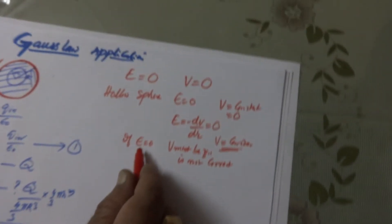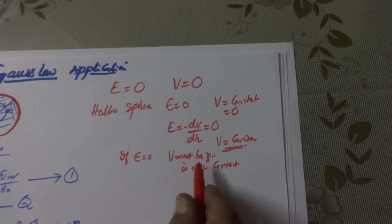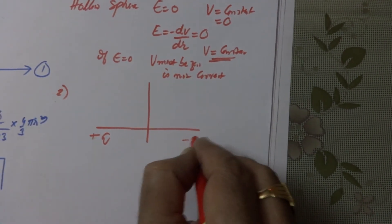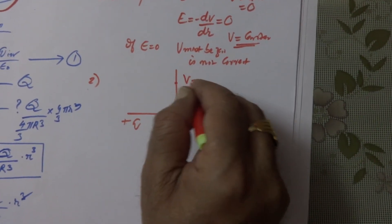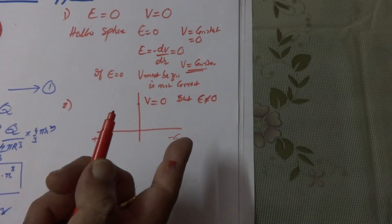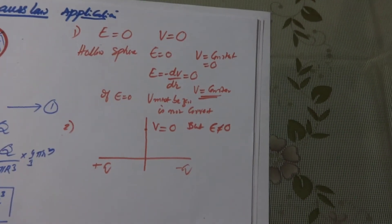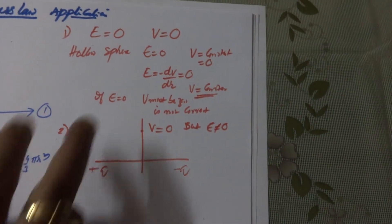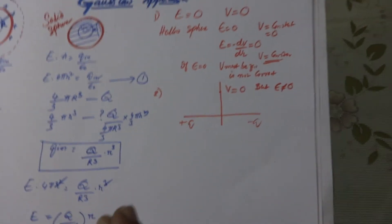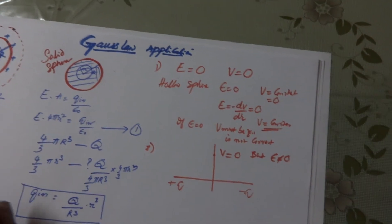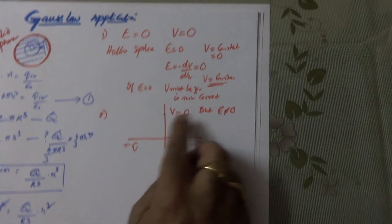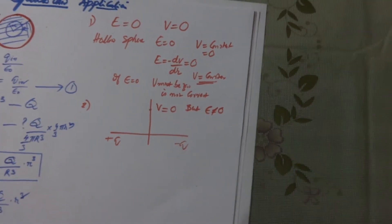If E equals zero in the case of the hollow sphere, E will be zero even though it is a charged spherical shell, but V is not equal to zero. On the other hand, on the equatorial line of a dipole, the potential V is equal to zero, but E is not equal to zero. So it is not necessary that if potential is zero the electric field must be zero, or if electric field is zero the potential is also zero. The hollow sphere is the example for E=0 but V≠0, and the dipole equatorial line is the example for V=0 but E≠0.